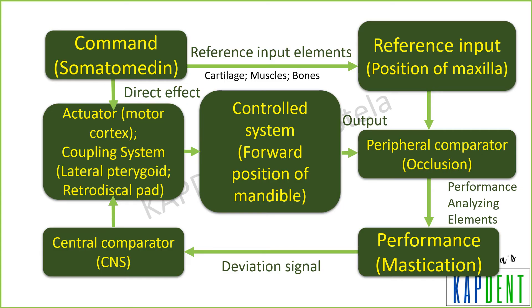Now that we have seen the components, let us understand how this system operates. A command in the form of release of growth hormone induces the outward and forward growth of the maxilla, due to which the position or the reference input of the maxilla changes. Owing to this growth, there is a change in the original ideal cusp-to-fossa relationship of the teeth, which leads to poor performance or improper mastication, which is sensed by the peripheral comparator, and this sends a deviation signal to the CNS.